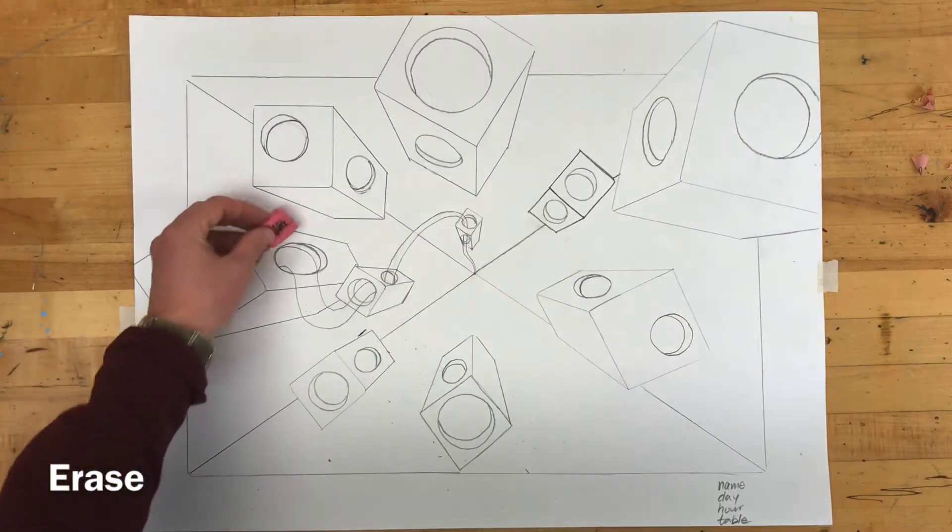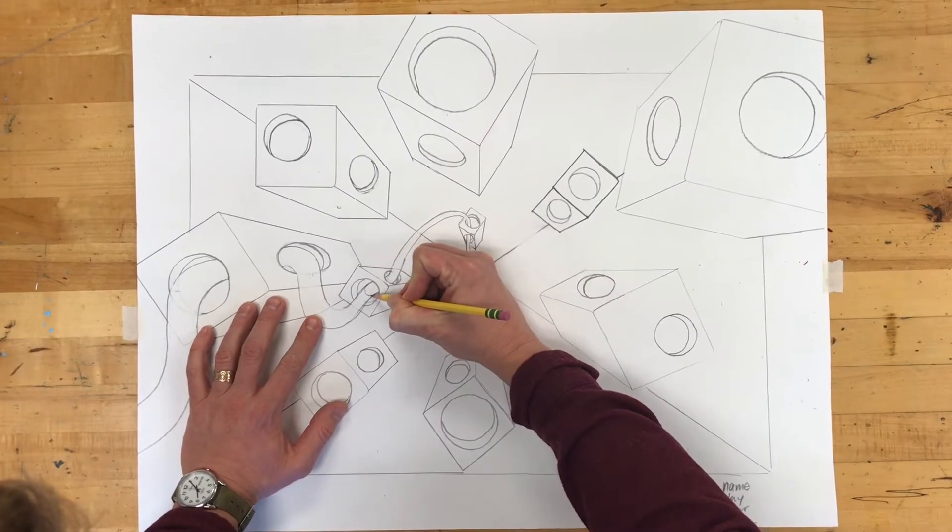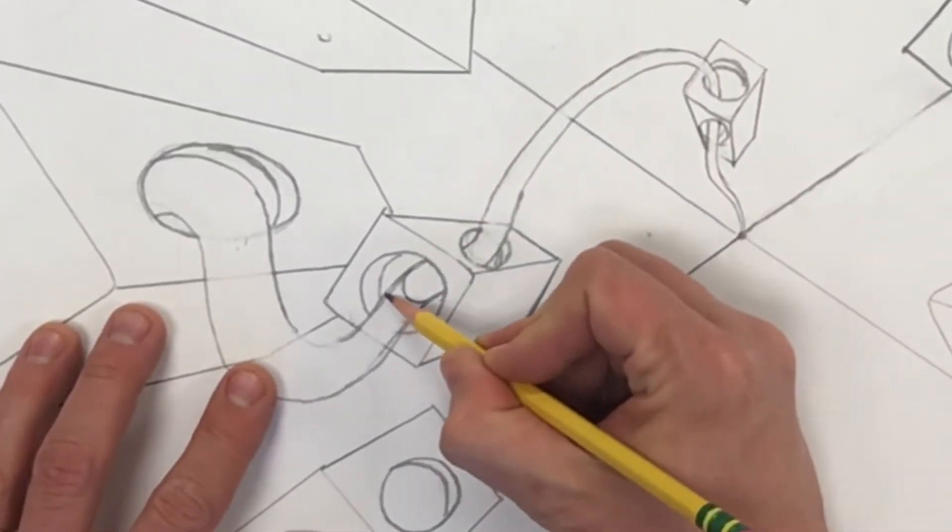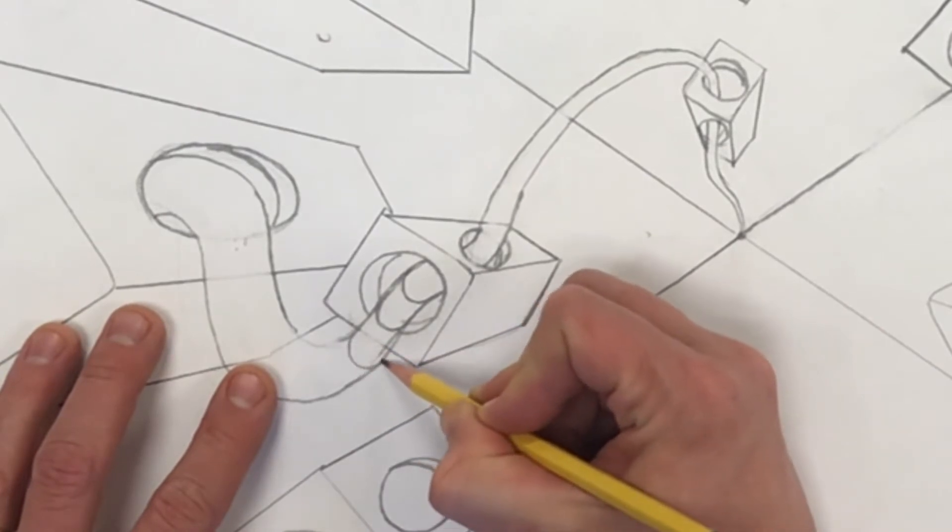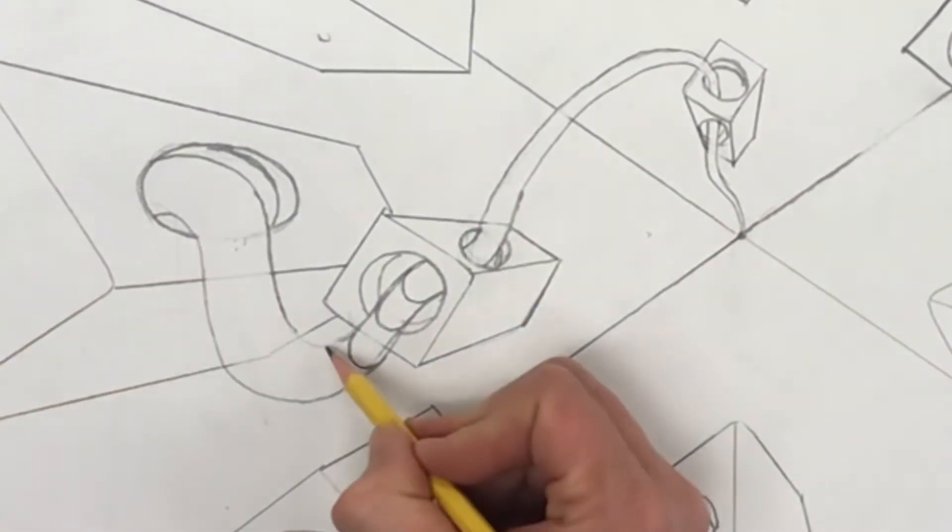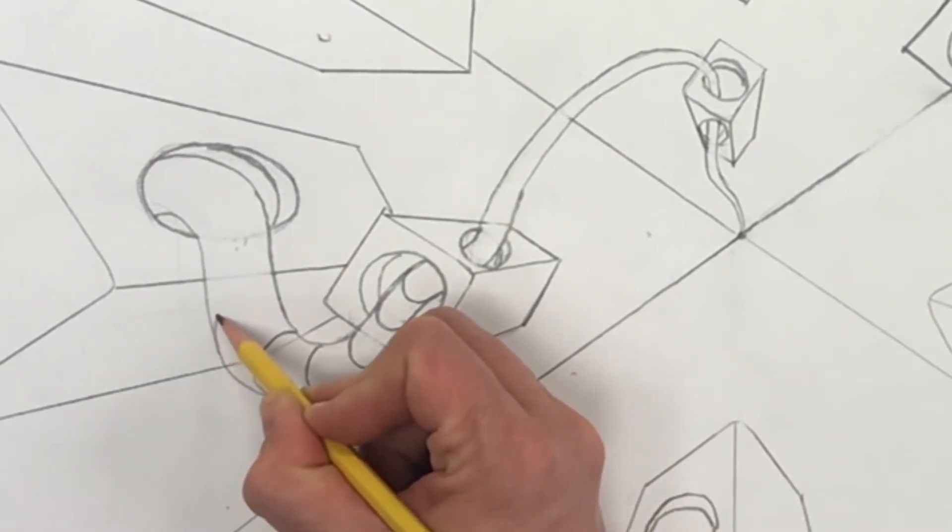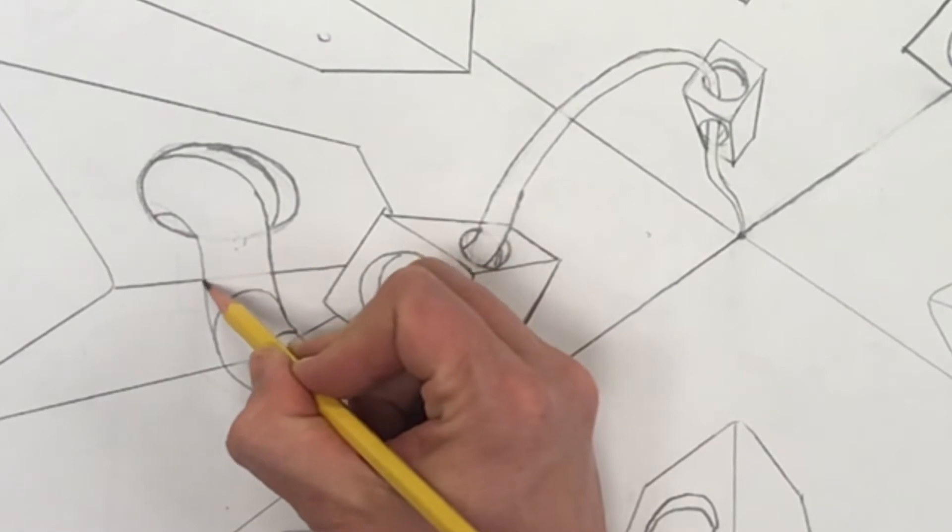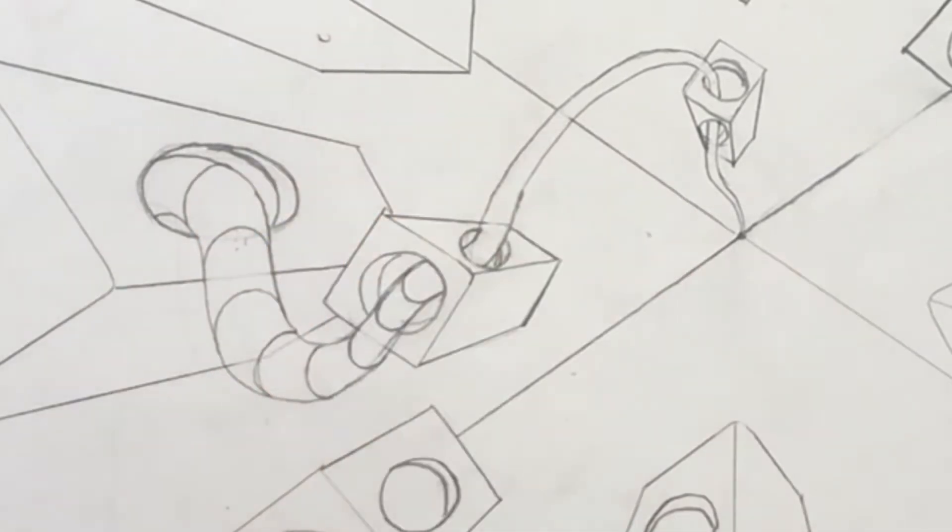Now it's time to erase any lines that are inside of our worm. The goal is to make our worms appear to be round, so we're going to want to use round lines. The easiest way to do this is to start with your pencil inside the outer line. Watch how I start on the outside of the worm, curve my line back into the other side of the worm. How satisfying is that?